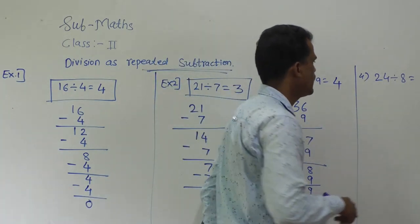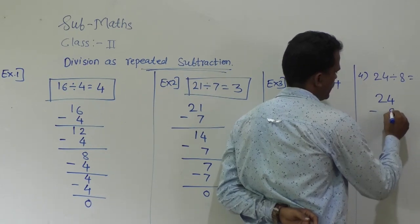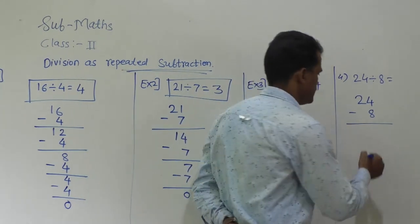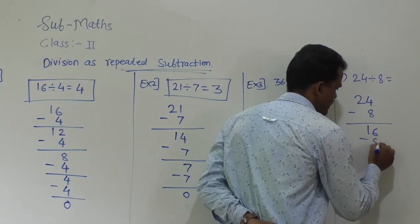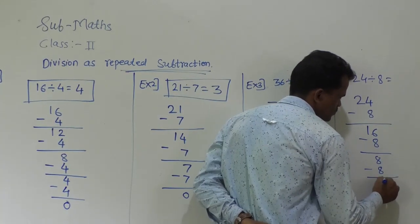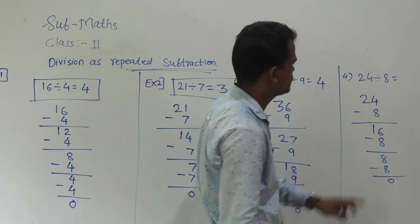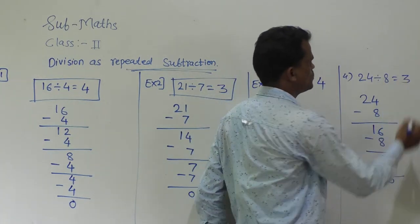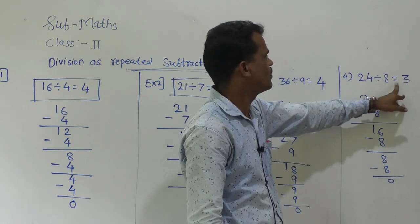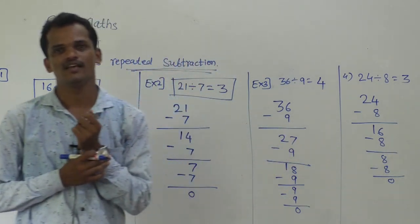Then 24 divided by 8. Write the dividend and subtract 8. 24 minus 8 is 16, then 16 minus 8 is 8, and 8 minus 8 is 0. Count how many times we subtracted: 1 time, 2 times, and 3 times. So 3 is the quotient. Cross-check: 8 threes are 24 — our answer is correct.